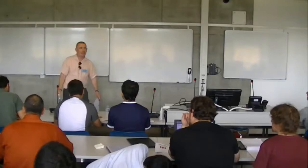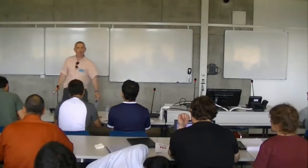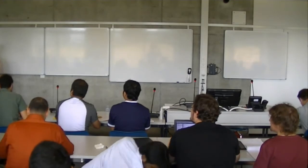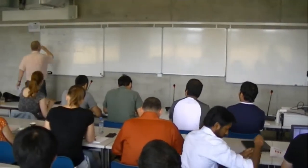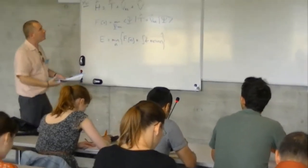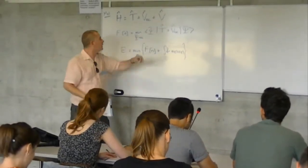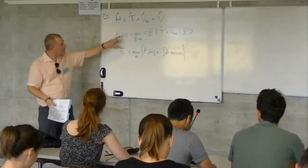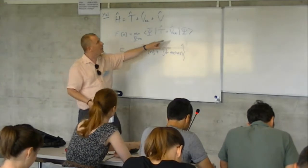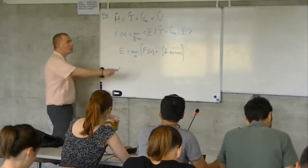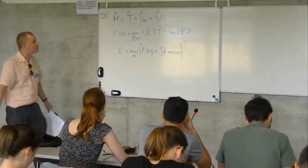So this — I know it took about 45 minutes to an hour — but this is all that Mel said, as far as I'm concerned. So your Hamiltonian has these three pieces: kinetic, electron-electron repulsion, and the one-body piece. We're going to define F as a function of the density and minimize these pieces over all possible wave functions, yielding the density that you have.